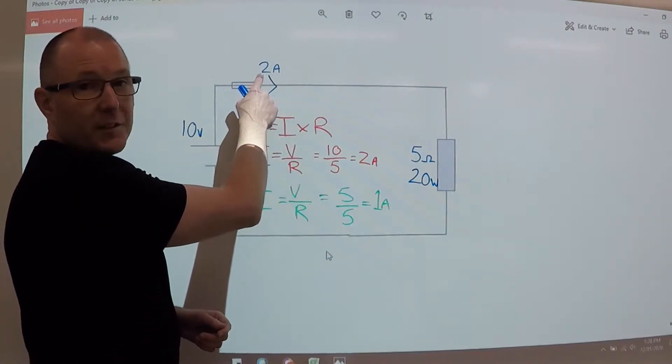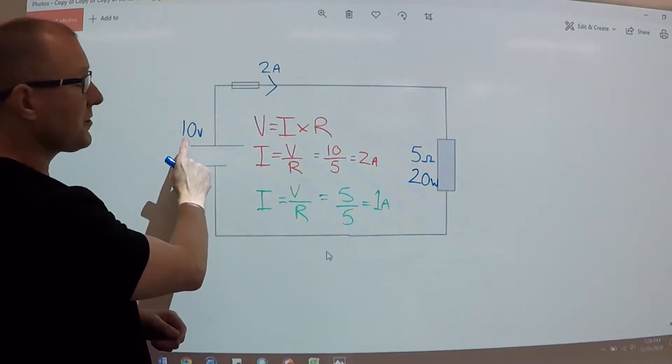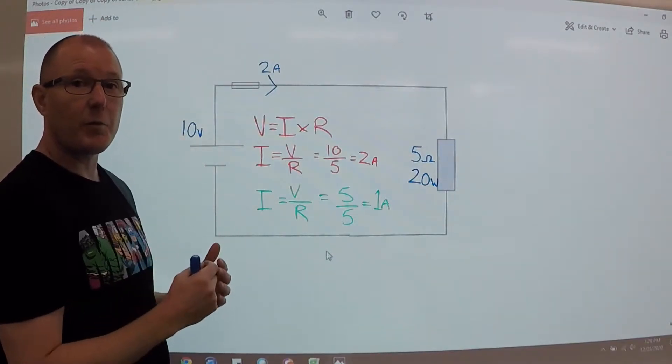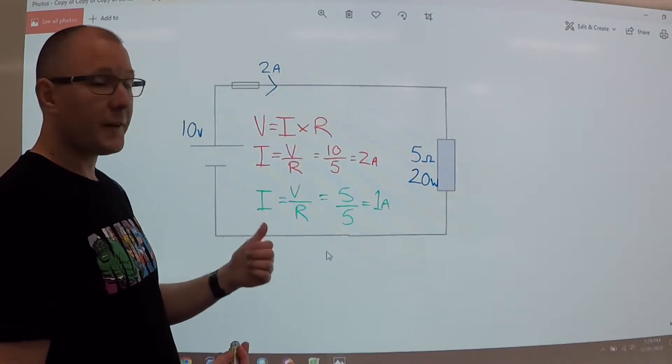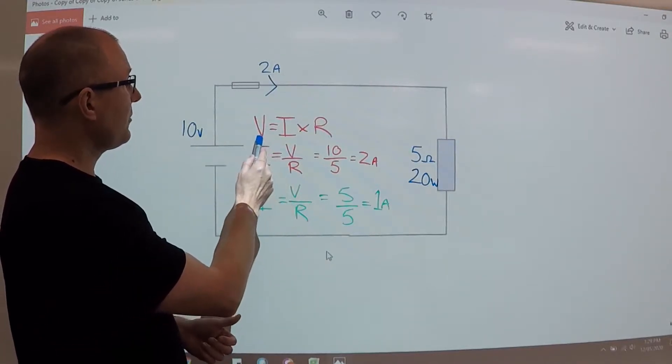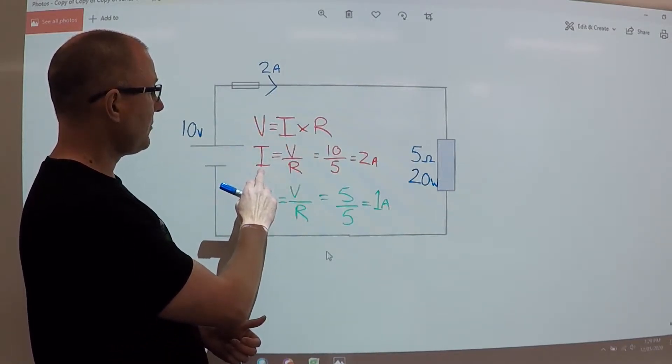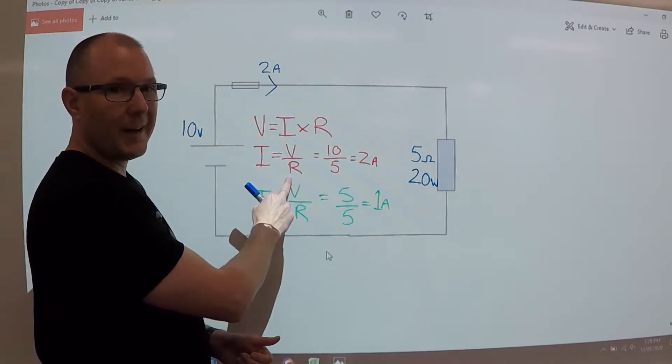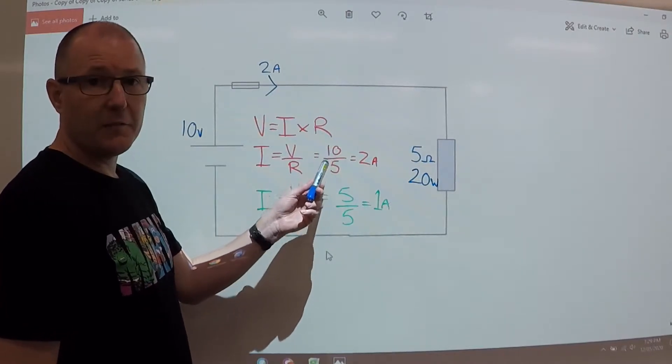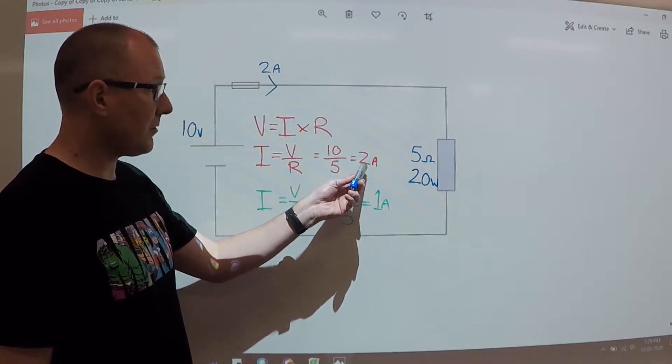So let's say we didn't know the current, but we know the resistance and we know the voltage. So we're going to use Ohm's law to calculate what the current should be. So we all know V equals I times R, and I is equal to V divided by R. So we have 10 volts divided by the 5 ohms gives us 2 amps.